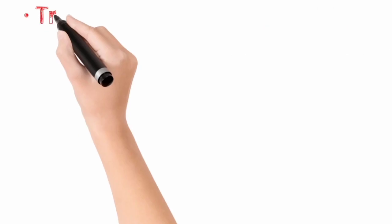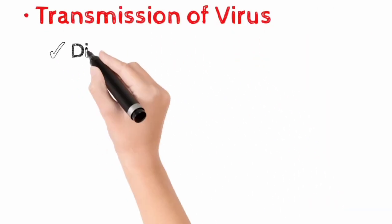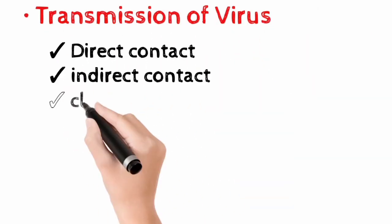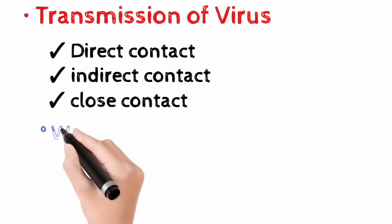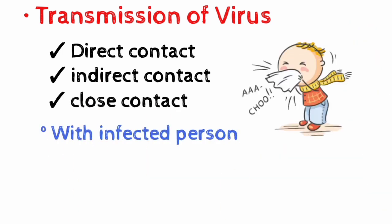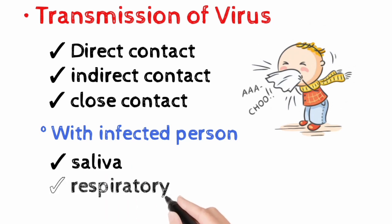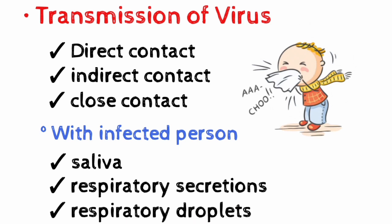The transmission of COVID-19 occurs primarily between people through direct, indirect, or close contact with infected persons, or through infected secretions such as saliva and respiratory secretions or by respiratory droplets of an infected person.